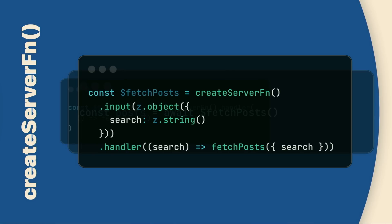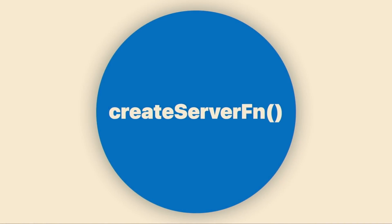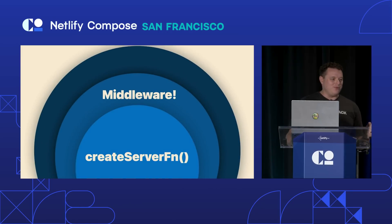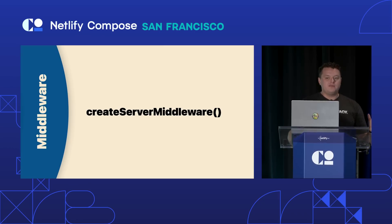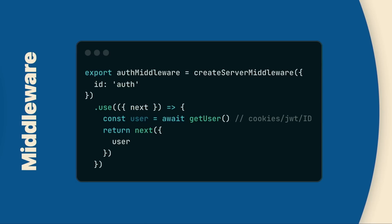You can define input validation that works on both the server and optionally the client. And what would server functions be without middleware? You can use createServerMiddleware to create composable middleware for your server functions. If you're familiar with tRPC — middleware — but this is just server functions: we're extracting code to run only on the server, and we get middleware with it. You can use it to authenticate users, perform logging, or share reusable tasks across multiple server functions and nested middlewares.